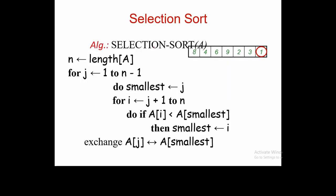This is the algorithm of selection sort. n equals the length of array A. The outer loop executes from j equal to 1 to n minus 1. We stop at n minus 1 because when only a single element remains, it is automatically in the correct position. We initially assume the minimum element is at index j.